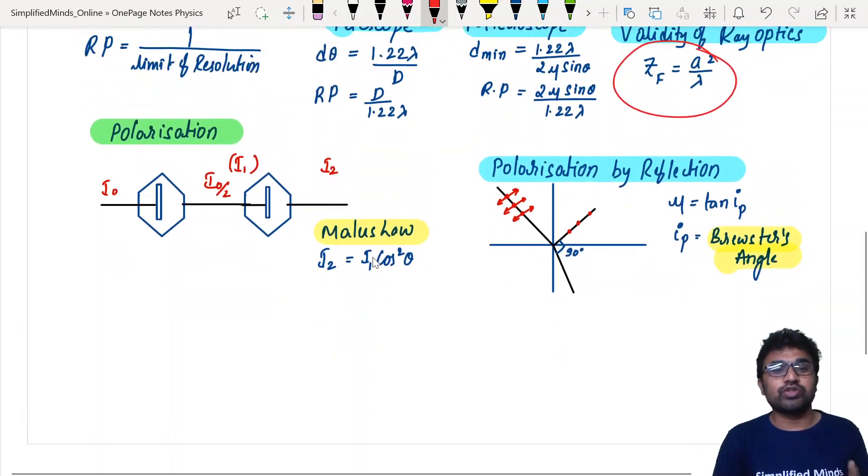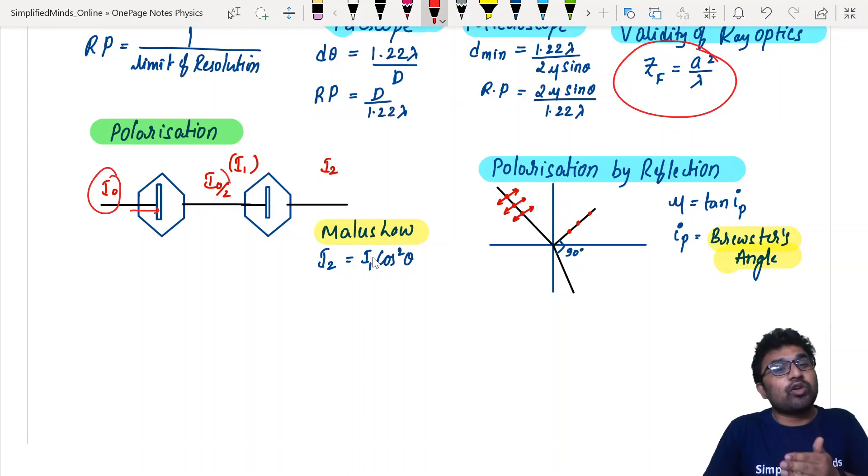Then coming to polarization, you should know what is polarization and Malus law. What is the intensity of light? Suppose if intensity I0 is falling on the polarizer, then what is coming out is I0 by 2. And what is coming out of the analyzer? This is basically a polarizer, this is basically an analyzer.